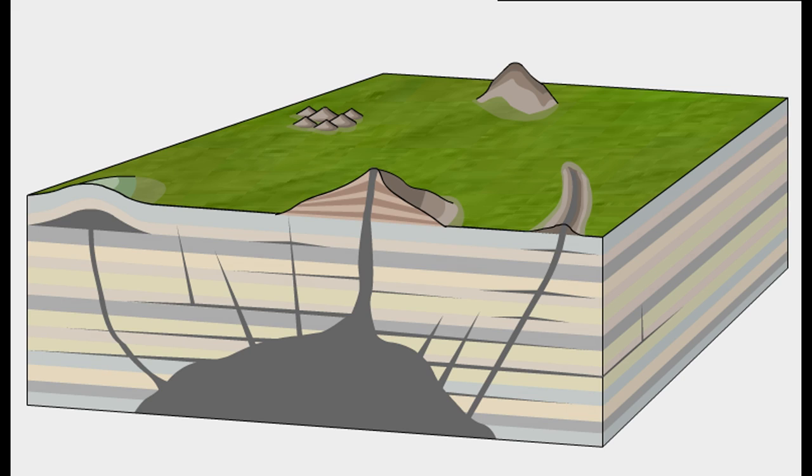Dykes are vertical intrusions which cut across the layers of rock. They often occur in groups which are known as dyke swarms. Many Scottish islands such as Mull and Skye have dyke clusters associated with them.